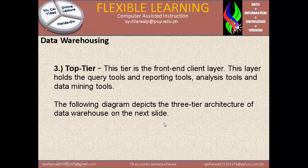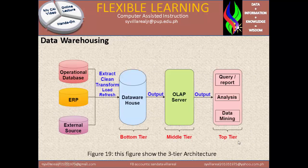The following diagram depicts the three-tier architecture of a data warehouse. In the diagram, the data warehouse is the bottom tier, the OLAP server is the middle tier, and query reports, analysis, and data mining represent the top tier. They are all databases and they are all connected to each other. All three tiers produce output, and the output here should be in the form of reporting.